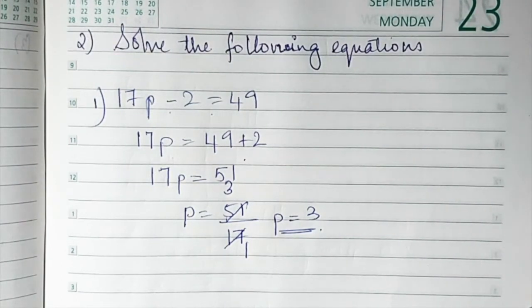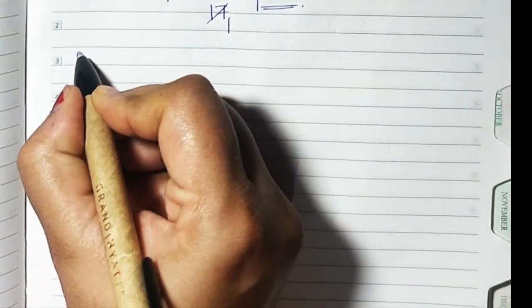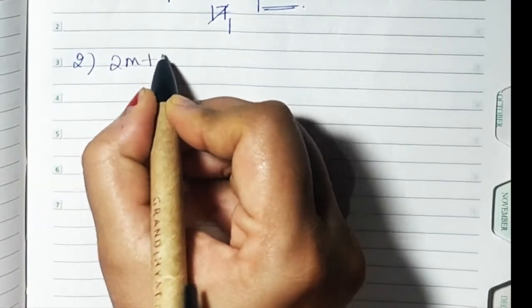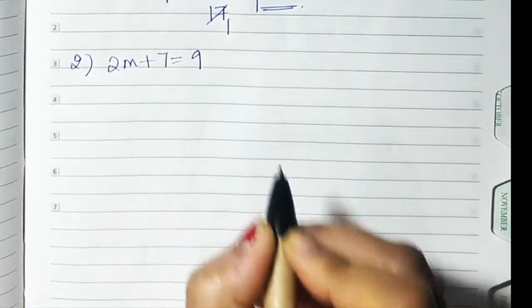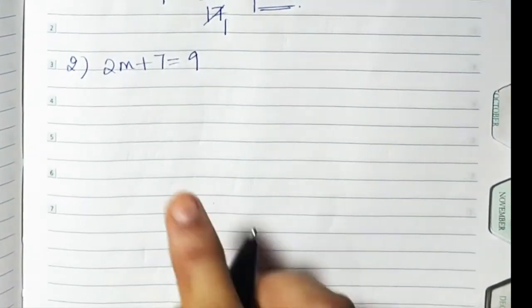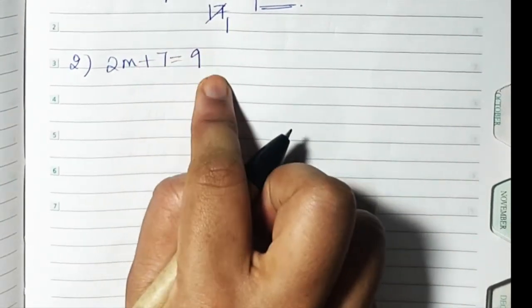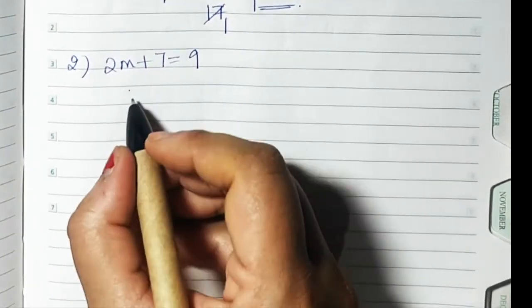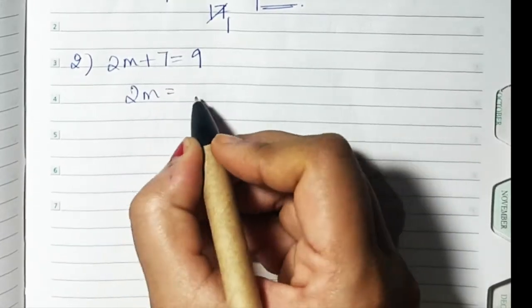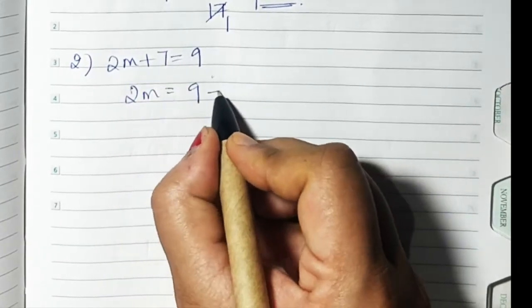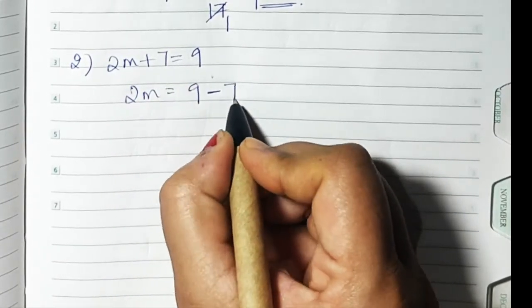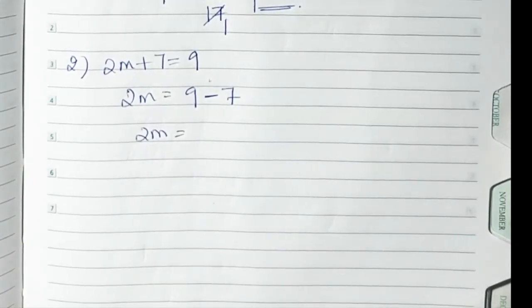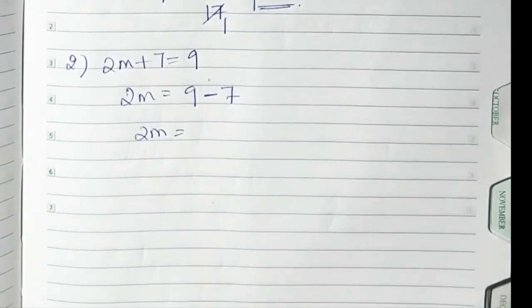Sum number 2: 2m plus 7 is equal to 9. When a positive term crosses the equal to sign to the other side, it becomes negative. So 2m equals 9 minus 7, which gives us 2.